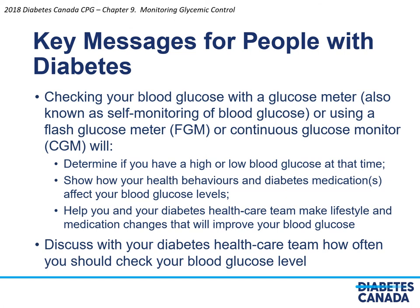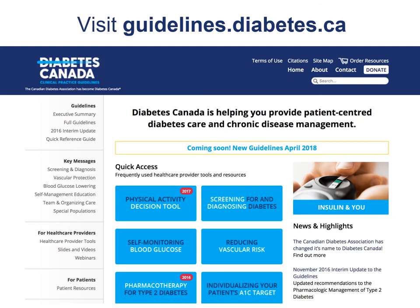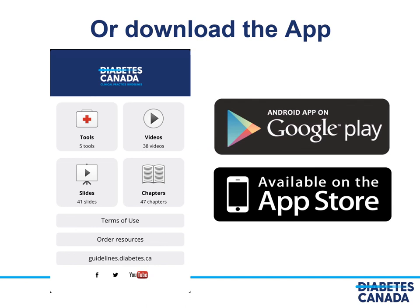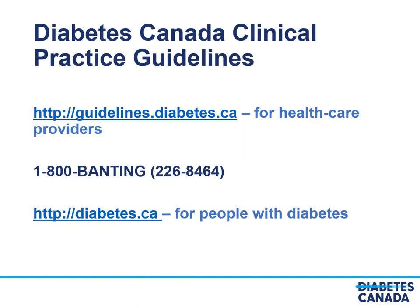Discuss with your diabetes healthcare team how often you should check your blood glucose level. More information on the guidelines can be found at guidelines.diabetes.ca, where you can access the full chapter, additional slide sets, and quick access to healthcare provider tools and resources. You may download the app from Google Play or the App Store to access tools, videos, slides, and the chapters. The Diabetes Canada Clinical Practice Guidelines are available at guidelines.diabetes.ca for healthcare providers, and diabetes.ca has information for people with diabetes. If you have any questions, you should call 1-800-BANTING.